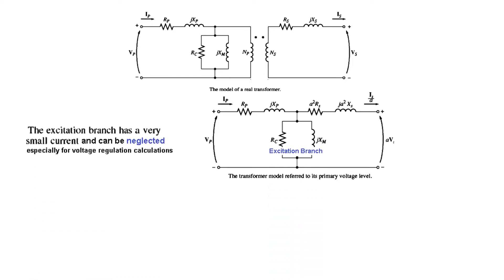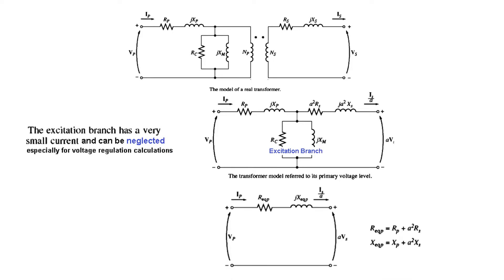This branch is called the excitation branch. The excitation branch has a very small current and can be neglected, especially for voltage regulation calculations. So if we neglect this, our circuit will be just the upper part. If we add the real portions and the imaginary portions, we will have R equivalent and jX equivalent. It is given that R_eq equals R_p plus A²·R_s, and similarly X_eq_p. So we will be using this simplified circuit to solve this question.